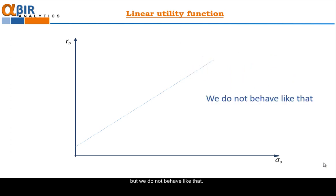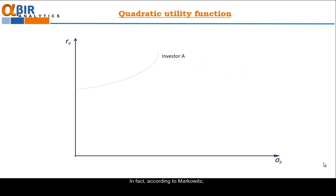Therefore, our utility from investment can be presented on the return risk space with this line. But we do not behave like that. In fact, according to Markowitz, investors have quadratic utility function. What does it mean? Our risk aversion increases exponentially with increasing the risk. This curve here presents such utility function for one investor A. This investor is risk averse.